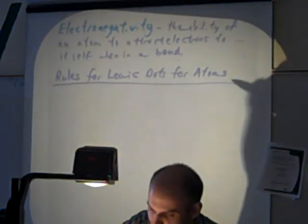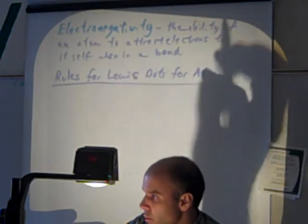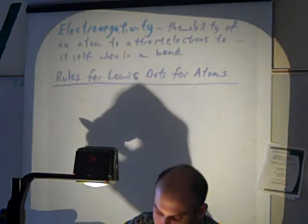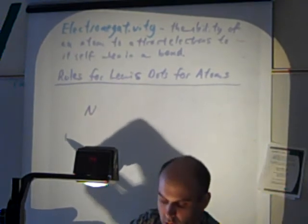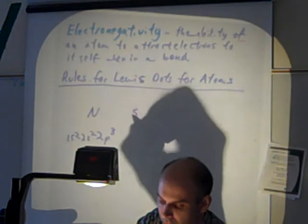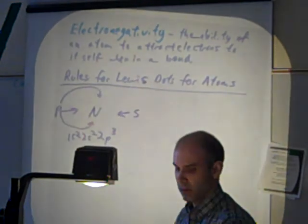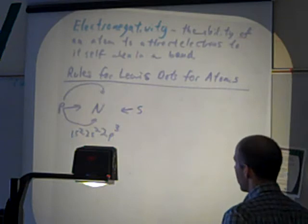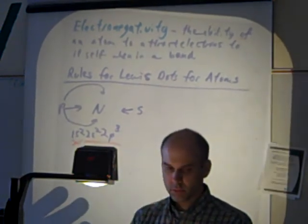Alright. Anyhow, rules for Lewis dots for atoms. If I start going too fast, I'll tell you to slow down. I'm kind of cranked up. It's a good day today. We're going to represent electrons as dots. And this was developed by Dr. Lewis from Columbia University, I believe. And what we do is, let's say, let's take nitrogen. The electron configuration for nitrogen is 1s2, 2s2, 2p3. We put the s electrons on the left side and the p electrons on the remaining three sides. I don't get it. So we are only worried about valence electrons. So in other words, we're only going to look at these guys. We're not going to look at the 1s at all.